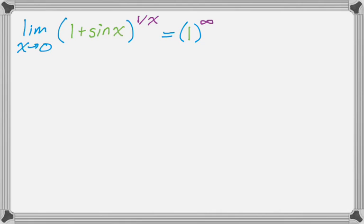So, we have 1 to the infinity, it's indeterminate, that's not clearly defined. So, what we do is this. You take the thing that you're taking the limit of, and we let it equal y.